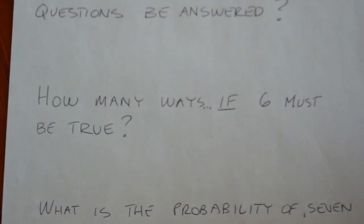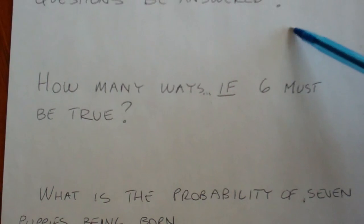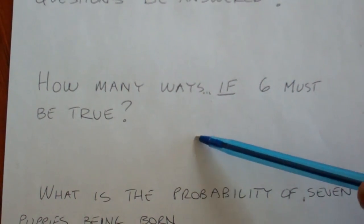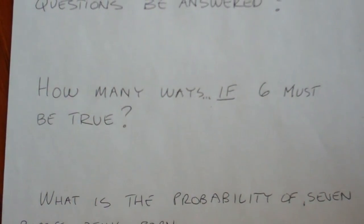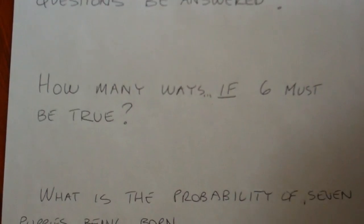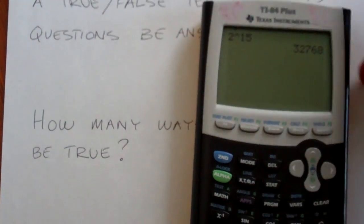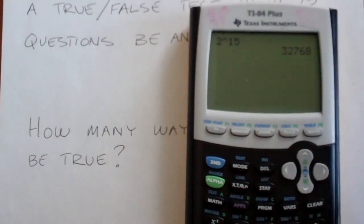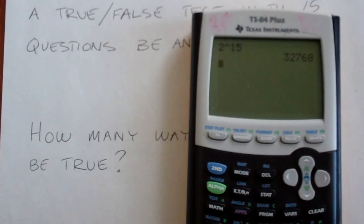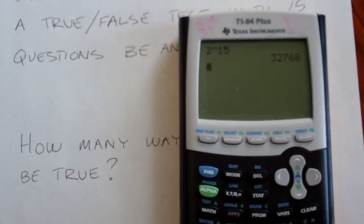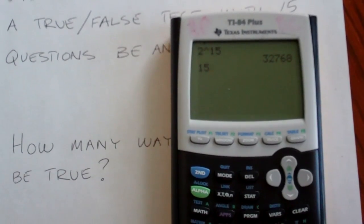This is where we'd use Pascal's triangle — we'd go down to row 15 and count 0, 1, 2, 3, 4, 5, 6. But we can do this on our calculator. The way we do that is we simply type in the number of questions — in this case, 15 — and then go to the Math button.